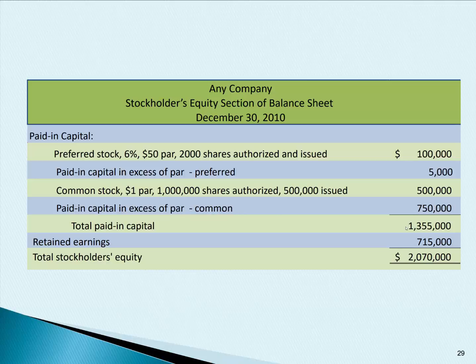That gives us a total paid-in capital of $1,355,000. And retained earnings — remember, retained earnings is past profits not yet paid out in the form of dividends — $715,000. So our total equity is $2,070,000.